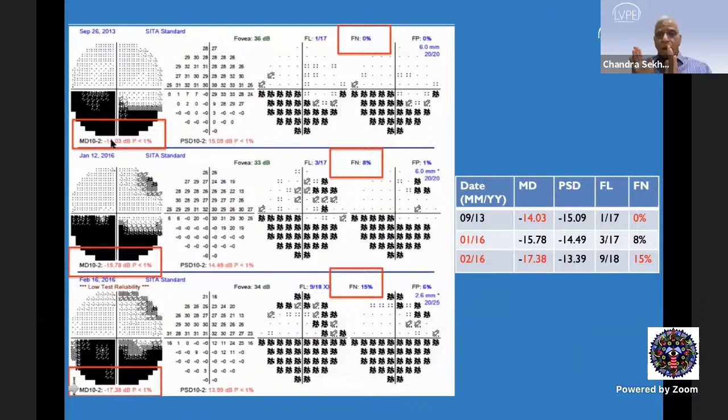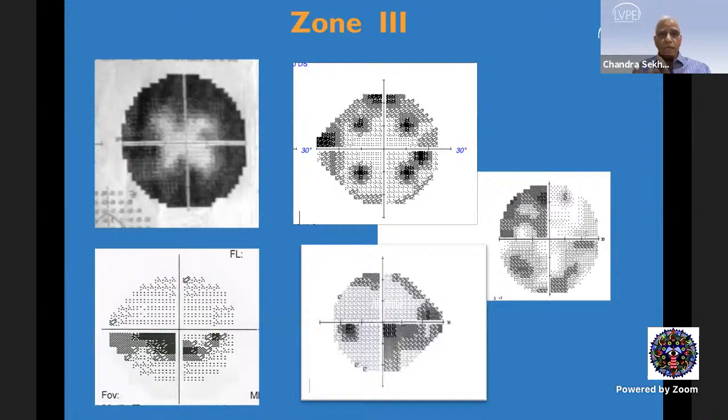However, here is an example from 2008 to 2010 consistently showing abnormal points in the inferior nasal step area, with the pattern deviation plot consistently worse than the total deviation plot. On disc examination, there is a superior nerve fiber layer defect that correlates with the visual field defect. So while we teach these classic patterns, there will always be exceptions. As for false negative errors, if the patient is not paying attention, the visual field looks like it is worsening — from minus 4 to minus 17 MD on a 10-2 program, but false negative errors increasing from 0% to 15%.